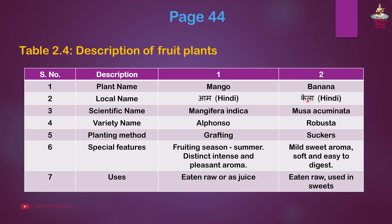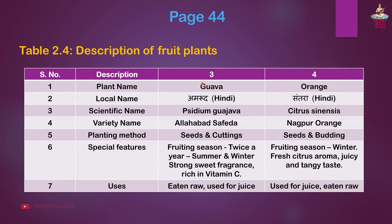Second fruit plant: Banana. Local name: Kela in Hindi. Scientific name: Musa acuminata. Variety: Robusta. Planting method: Suckers. Special features: Mild sweet aroma, soft and easy to digest. Uses: Eaten raw and used in sweets.